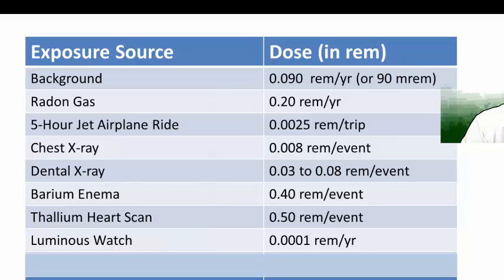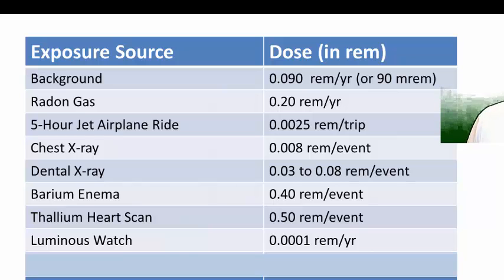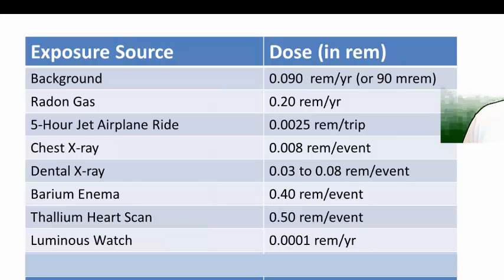We can also be exposed to radiation through radon gas, which seeps through the ground — 0.20 REMs per year is an average exposure to radon gas. These first two are background exposures we can't escape. If you're building a house, you may have to have a radon test performed because land with too high a level may not receive a building permit. Taking a jet airplane ride leads to additional exposure of 0.0025 REMs per trip. Chest X-rays and dental X-rays add to our exposure. A barium enema adds a large amount. A thallium heart scan produces 0.5 REMs per year. Even your luminous watch produces just a very small amount of radiation exposure.